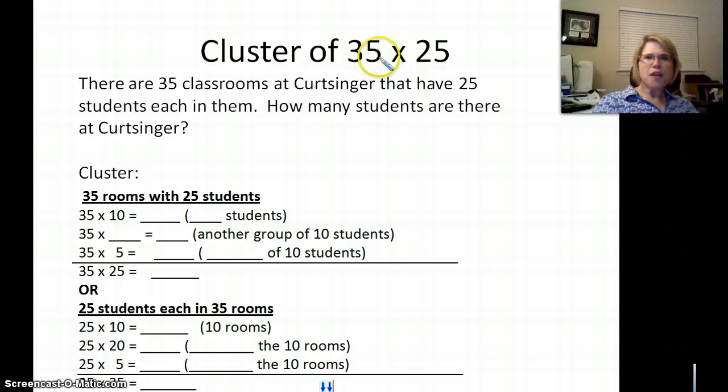Want to see another one? 35 times 25. I'm going to show you how to do this. There are 35 classrooms at Kurtzinger that have 25 students each in them. How many students are there at Kurtzinger? Well, let's take a look. I'm going to do this one with you, and I'm going to see whether you can do this bottom one by yourself. So what we're going to do is we're going to cluster 25 students first. I'm going to start with 10 students in each room, and 35 times 10 is 350. And that's 10 students in each room.